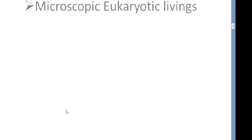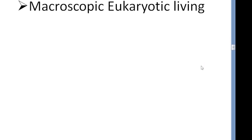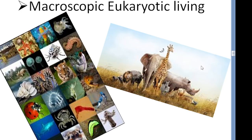Let's give some examples in photos. Here you have all the microscopic eukaryotic livings — they are eukaryotic and they have a true nucleus. I will return to this picture for more explanation. The second part are macroscopic eukaryotic livings. All the animals that you know are eukaryotic and belong to the animal kingdom.